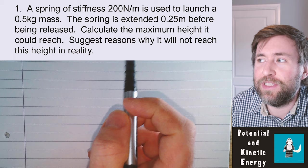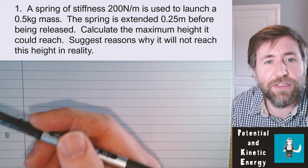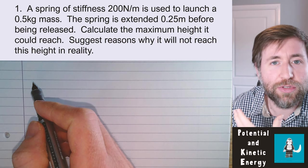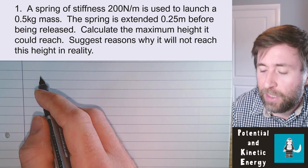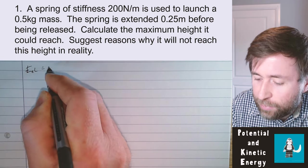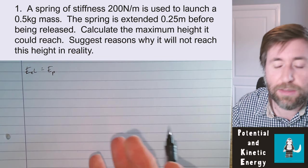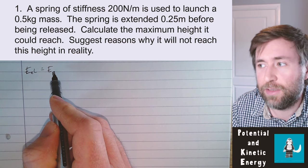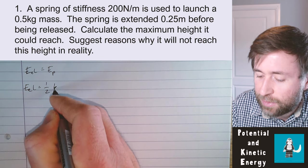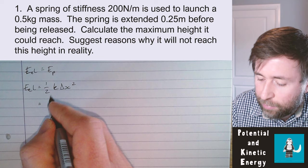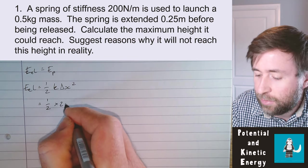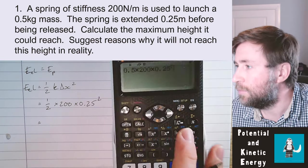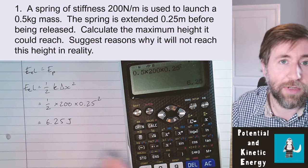We've been given stiffness, mass, and extension. This is about the elastic potential store transferring into the gravitational potential store — the elastic store we begin with equals the potential energy store we end with. So: elastic PE = one-half × k × x² = one-half × 200 N/m × (0.25 m)² = 6.25 joules.